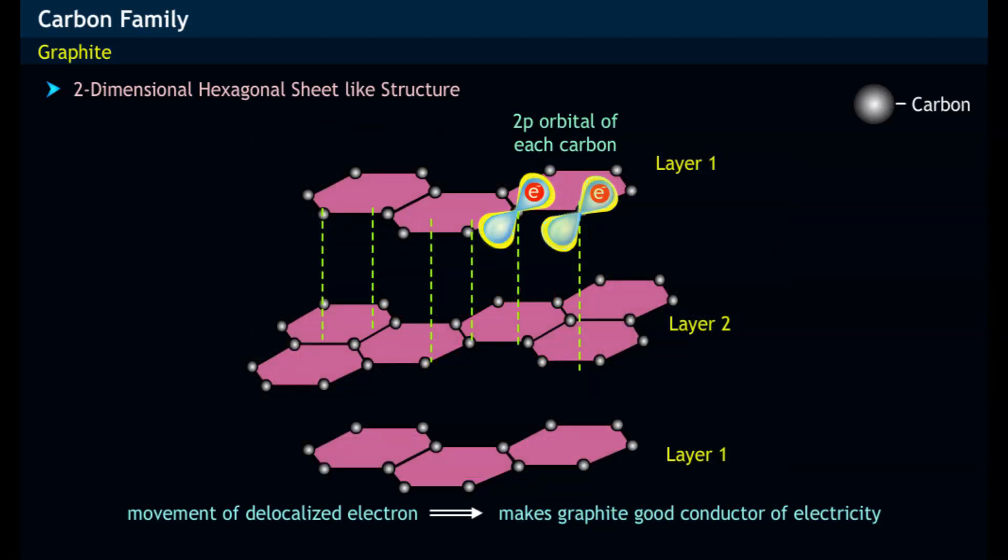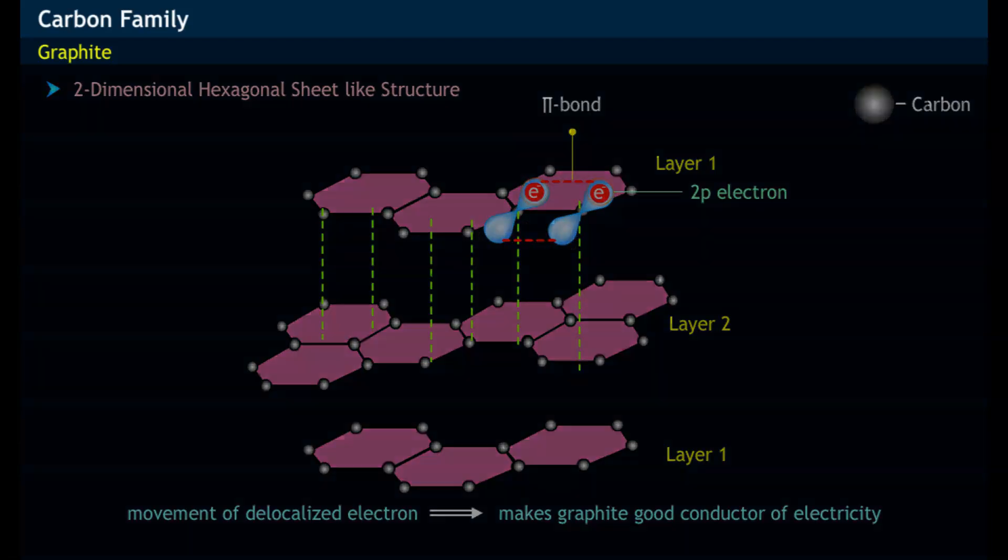The p orbitals of each carbon, having unpaired electrons, overlap with each other in a sideway fashion and thereby form pi bonds in graphite.